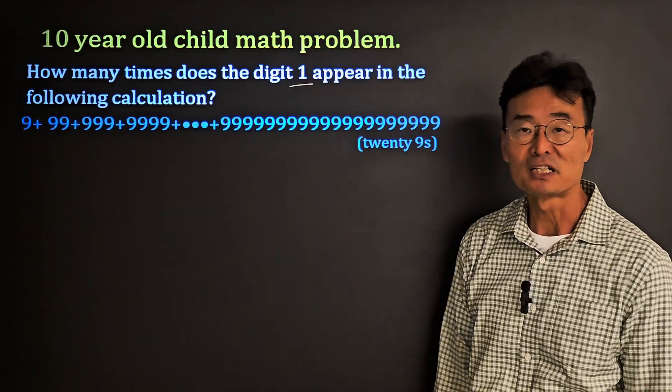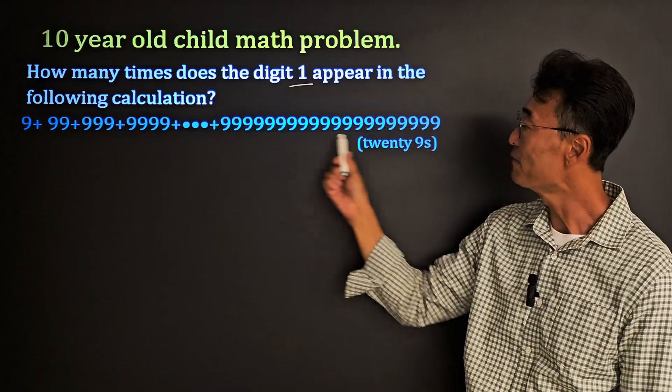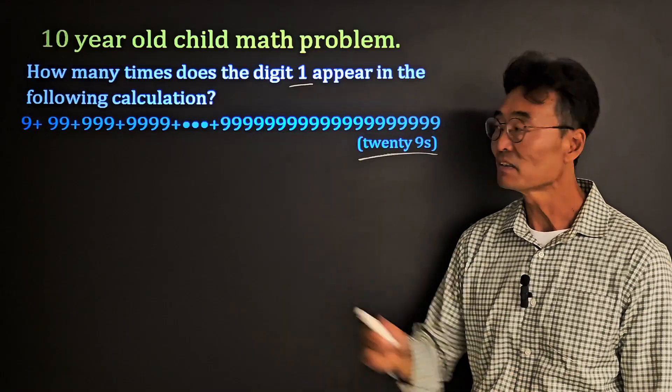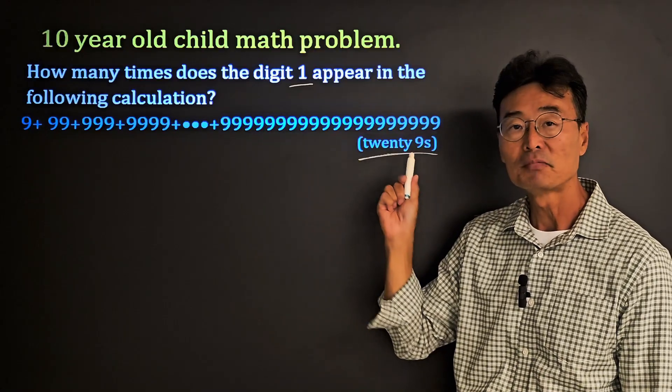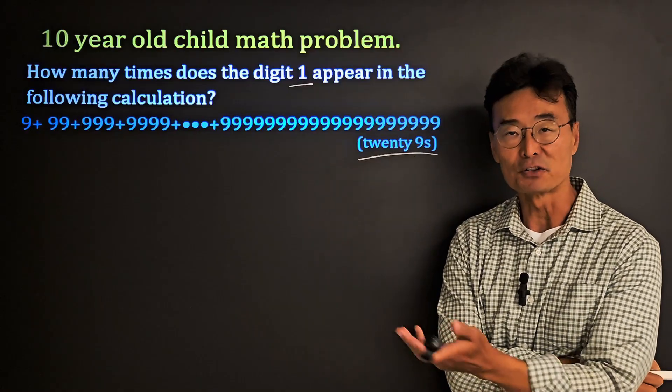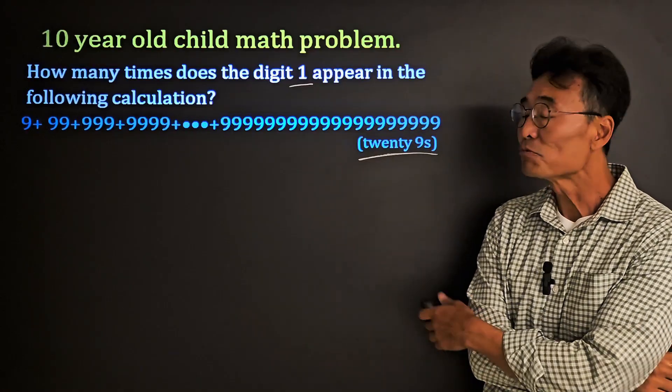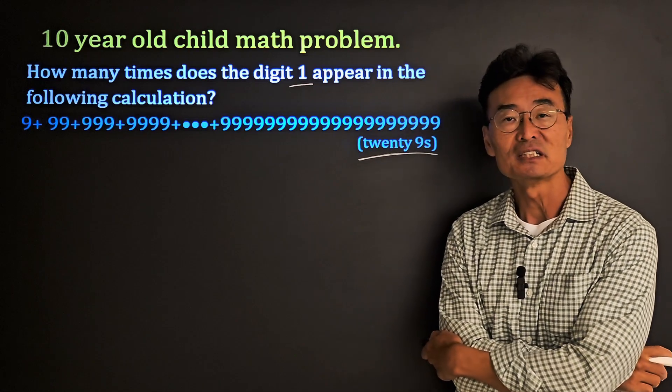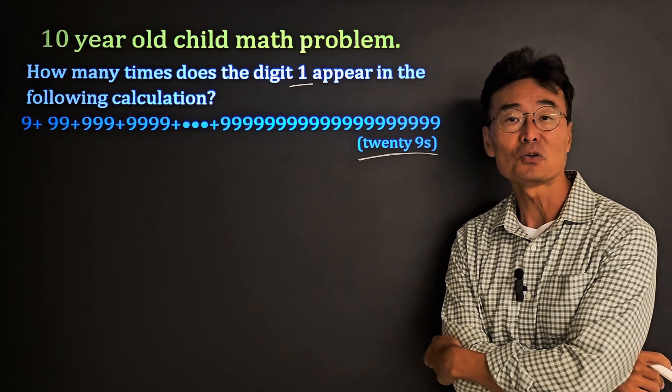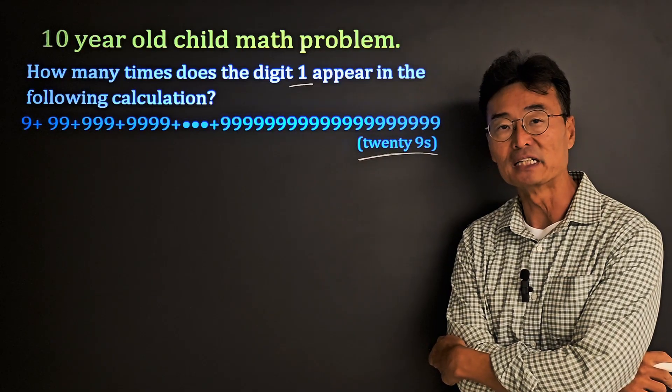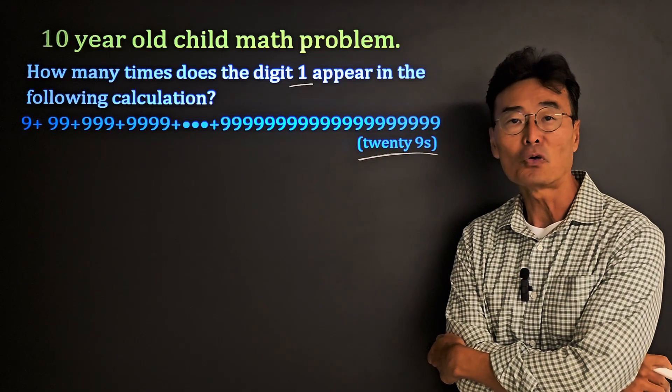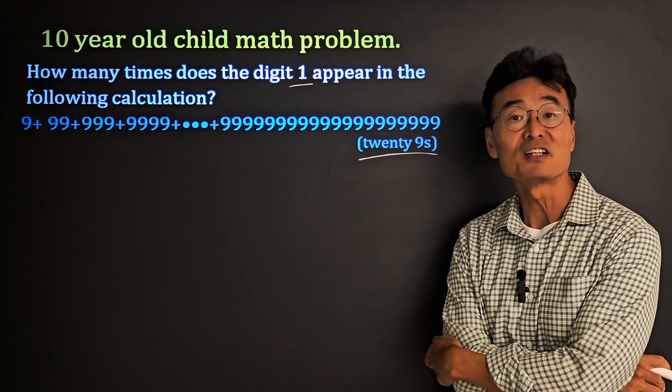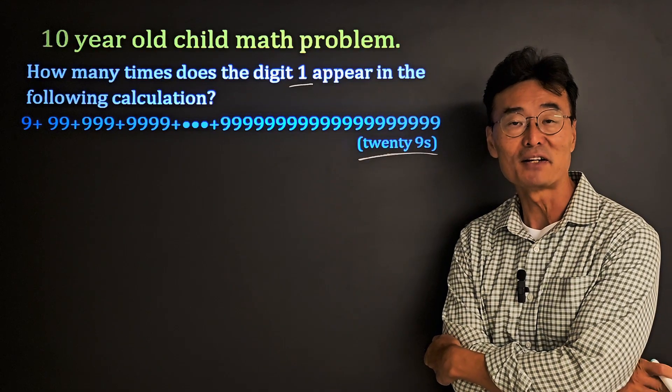9999 until we end up having 29 nines, add it all up. How many ones are there going to be? This particular question was given to kids about 7 to 10 years old in Seoul, South Korea, and even more crazy is that it was on an entrance exam to enter a tutoring center for advanced math.